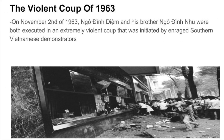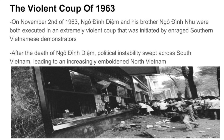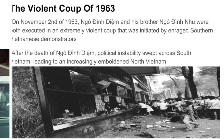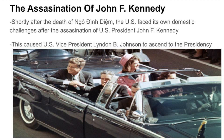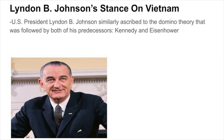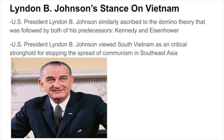On November 2nd of 1963, Goh Dinh Diem and his brother Goh Dinh Nhu were both executed in an extremely violent coup initiated by enraged Southern Vietnamese demonstrators. After Diem's death, political instability swept across South Vietnam, leading to an increasingly emboldened North Vietnam. The U.S. also faced domestic challenges after the assassination of President John F. Kennedy, causing Vice President Lyndon B. Johnson to ascend to the presidency. President Johnson similarly subscribed to the domino theory, viewing South Vietnam as a critical stronghold for stopping the spread of communism in Southeast Asia.